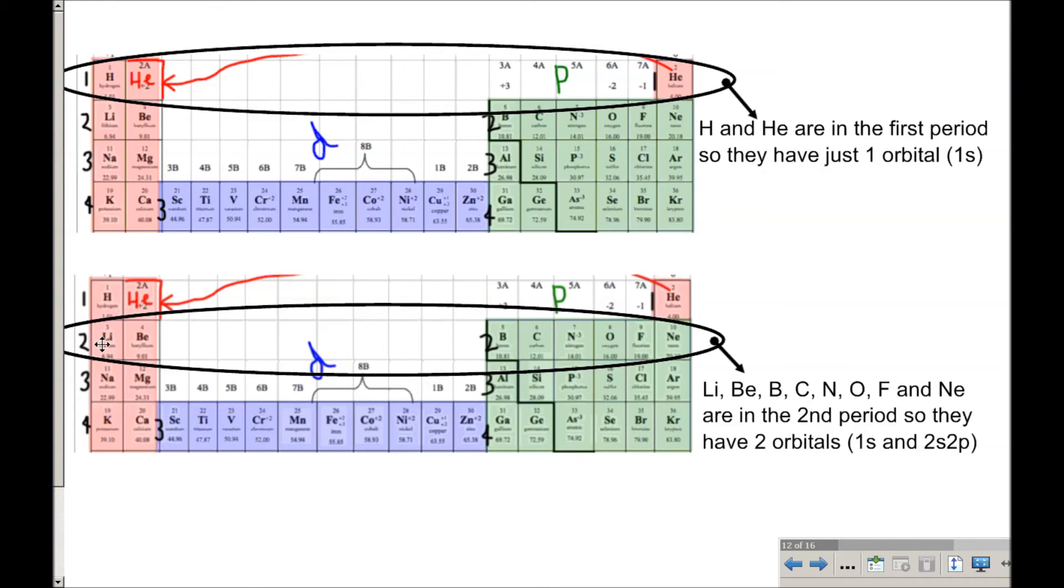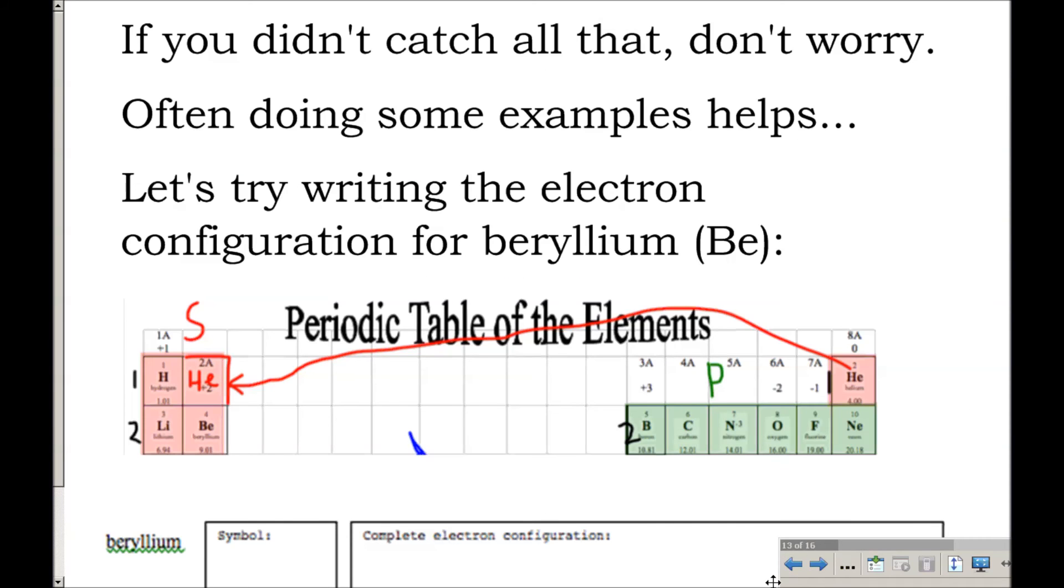And then lithium, beryllium, boron, carbon, nitrogen, oxygen, fluorine, and neon, all these in the second period, have two orbitals. So they have two shells around their nucleus. And we could go on and say the same type of a thing for the third period and the fourth period and so on. So if you didn't catch all of that, don't worry too much. Often doing some examples helps. And when we get to class, you'll do even more practice. This is one of those things where you just really have to practice quite a bit before you get comfortable.